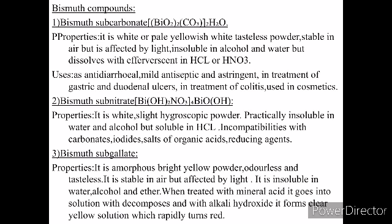Bismuth subnitrate, with formula (BiOH)(H2O3)4·BiOOH, is a white, slightly hygroscopic powder, practically insoluble in water and alcohol but soluble in HCl. Incompatibilities include carbonates, iodides, salts of organic acids, and reducing agents.